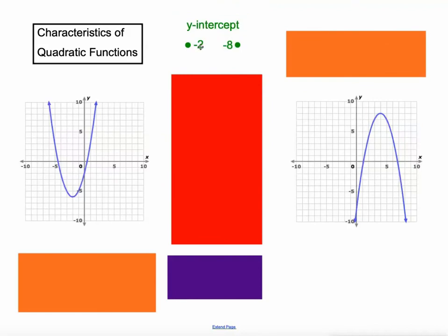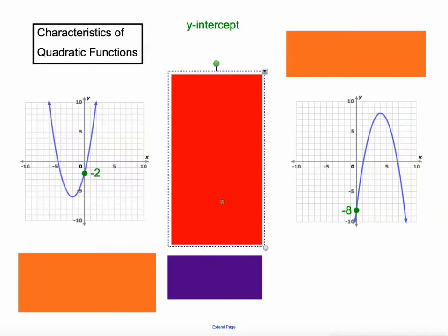First of all, the y-intercept. Just like linear relationships or any other kind of relationships, the y-intercept is where the graph crosses the y-axis. On this one, it's negative 2, or you can say it as a point: 0, negative 2. And on this one over here on the right, it's negative 8, or you can say it as a point: 0, negative 8. So the y-intercept is an important point on any quadratic function — it does show up in the graph and we'll talk about that in the future.